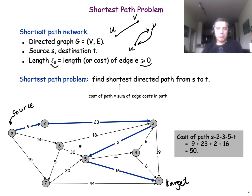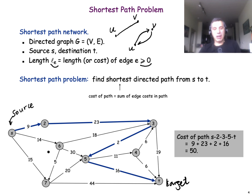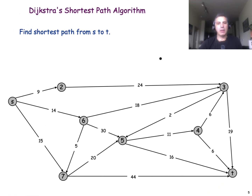This problem is very common in practice. You can think of applications such as routing a packet through the Internet, where you may have transmission links with different costs, or using something like Google Maps to find the best route from one place to another. There are literally thousands of applications of the shortest path problem. Now, instead of just presenting Dijkstra's shortest path algorithm, let's look at an example and try to essentially rediscover the algorithm ourselves.